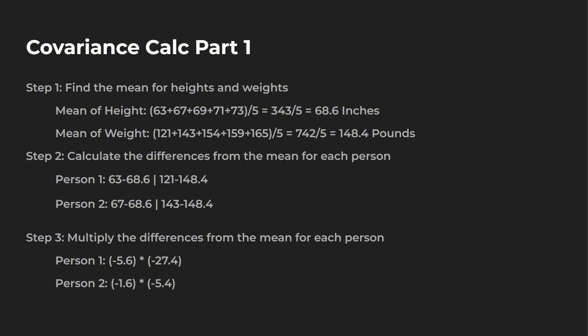Next, we're going to calculate each of the differences from the mean for each person. Person number one: height 63, our average is 68.6, so 63 minus 68.6. Weight 121, the mean of the weight is 148.4, so subtract those. Person number two: height 67, subtract 68.6, then 143 minus 148.4. You're going to do this for every single person. Next, what you want to do is multiply the differences from the mean for each person — person one: negative 5.6 times negative 27.4; person two: negative 1.6 times negative 5.4.